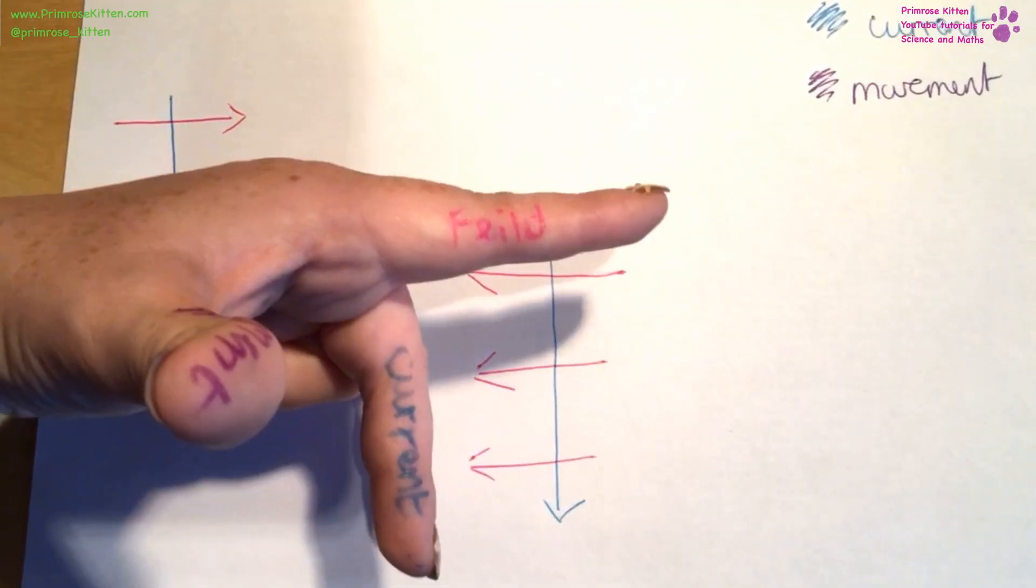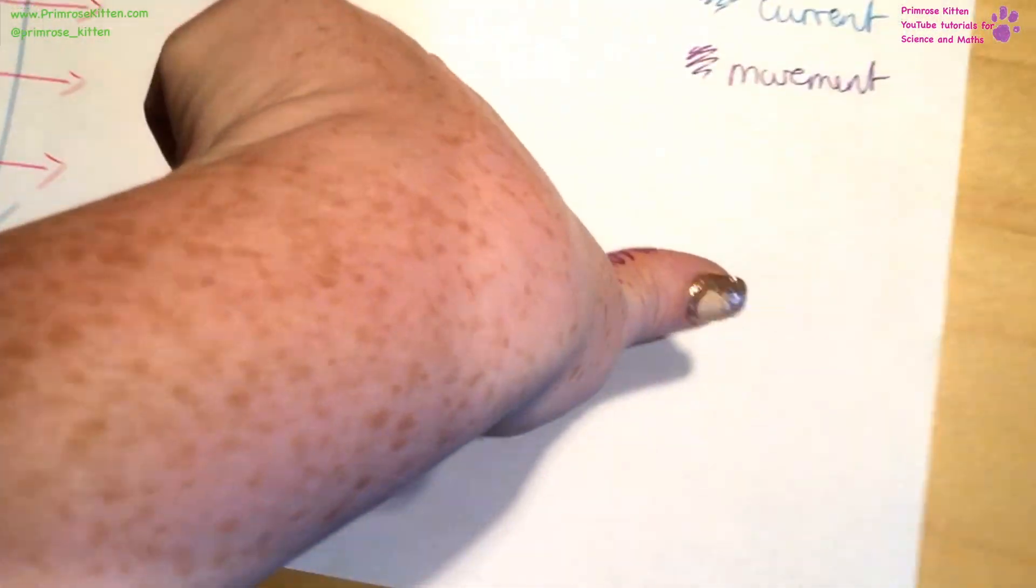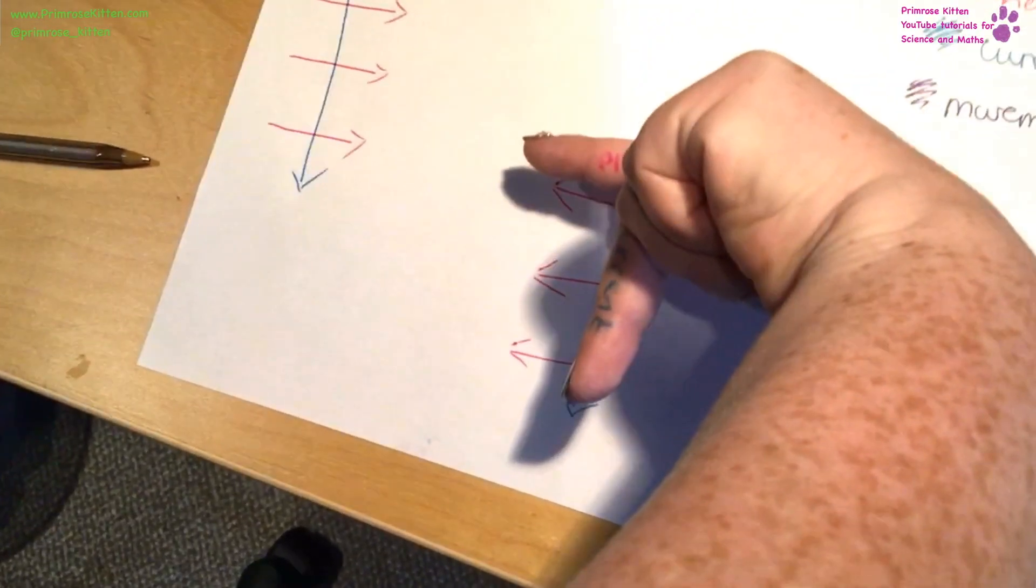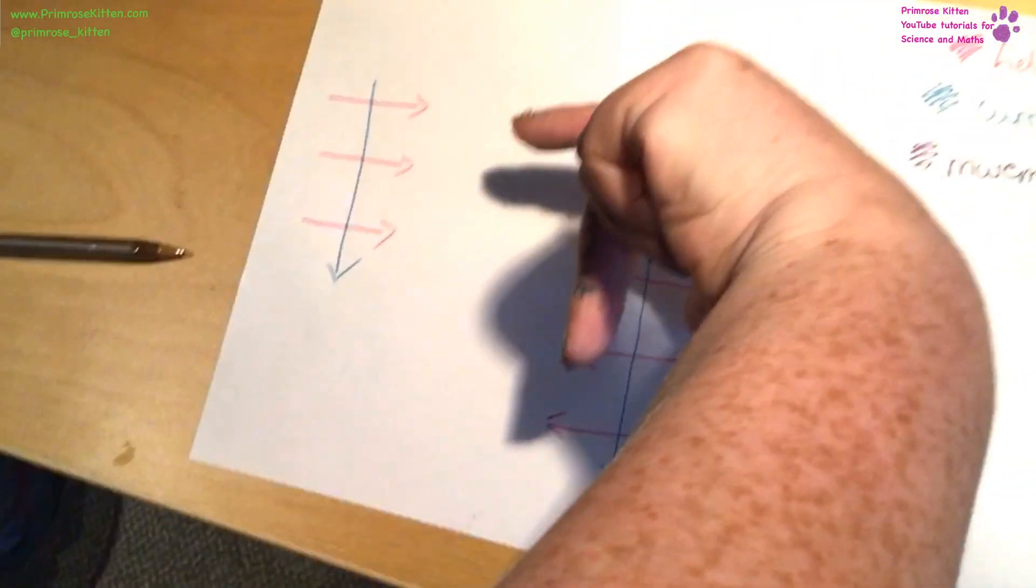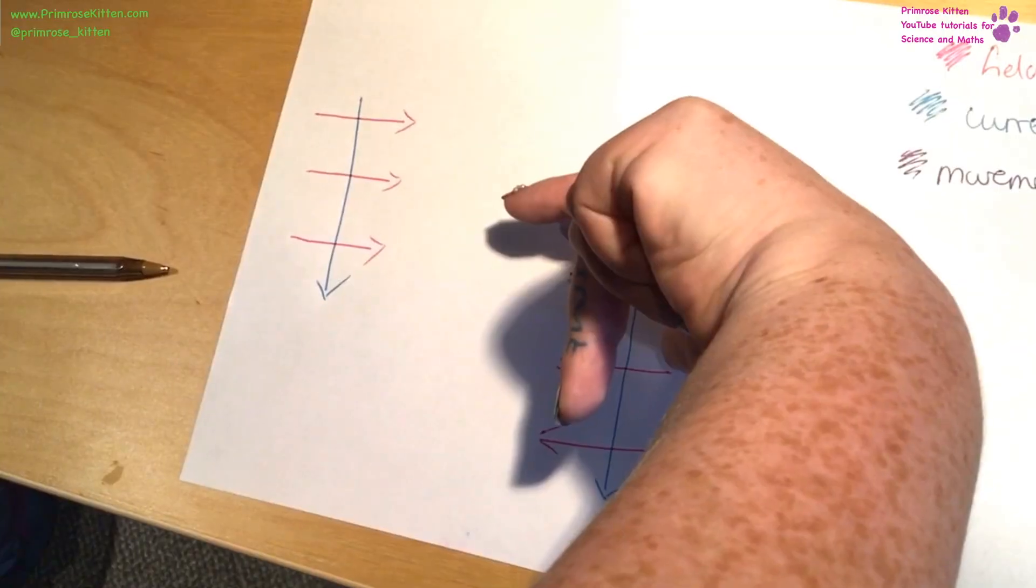This one here is a bit more complicated, because this finger needs to be pointing in that direction, my current needs to be going down, and then my thumb is going into the page.